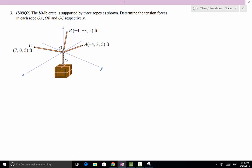So we start with the free-body diagram of the ring at O. It is connected to the crate, therefore this tension force simply equals the weight of the crate, 80 pounds.